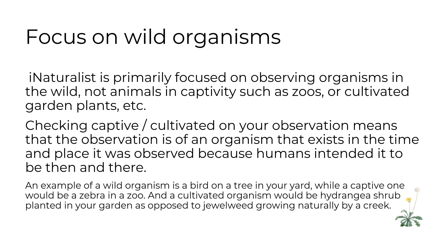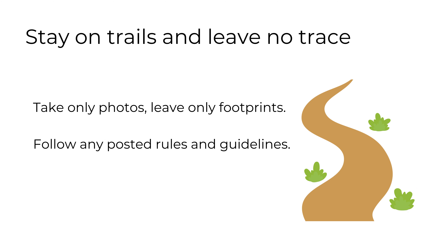An example of a wild organism is a bird on a tree in your yard, while a captive one would be a zebra in a zoo. A cultivated organism would be a hydrangea shrub planted in your garden, as opposed to a jewelweed growing naturally by a creek. Stay on trails and leave no trace — take only photos, leave only footprints — and be sure to follow any posted rules and guidelines.